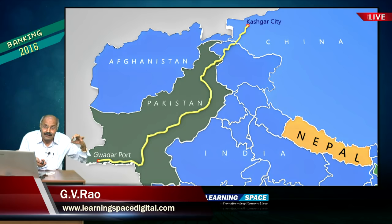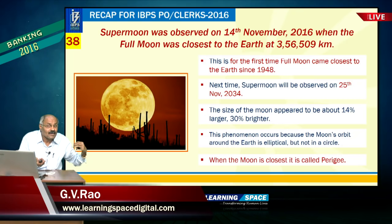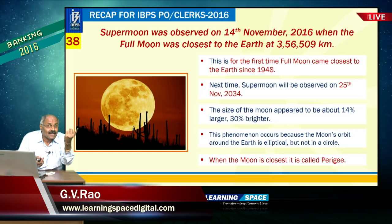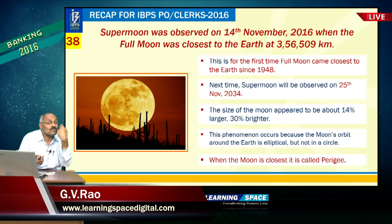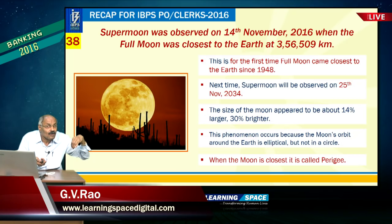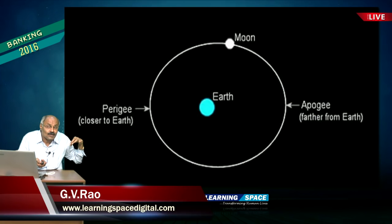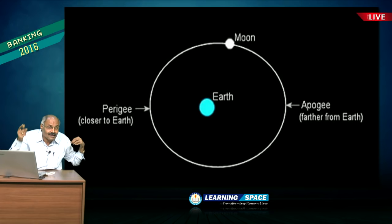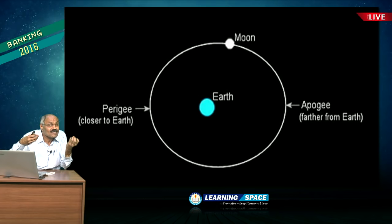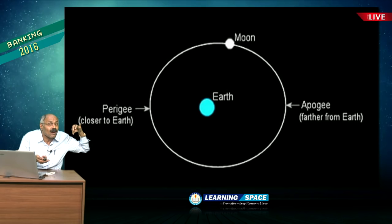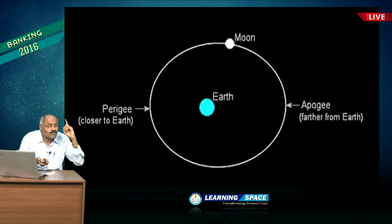The supermoon was observed on 14th November. The next supermoon will be in 2034. Two conditions must be met: the moon must be closer to Earth — at perigee — and that day must also coincide with a full moon day.